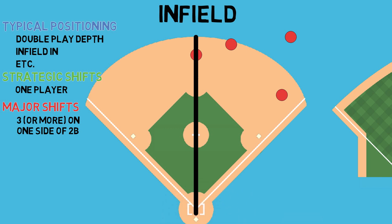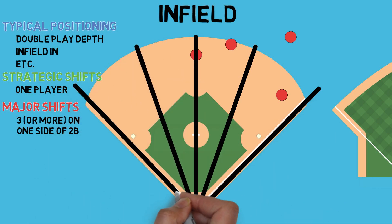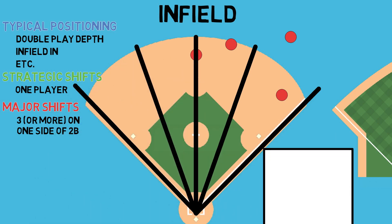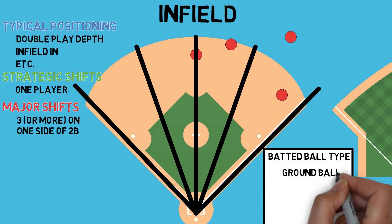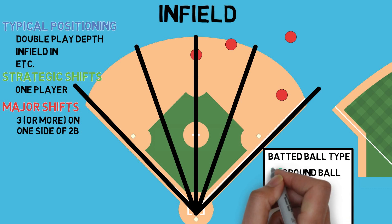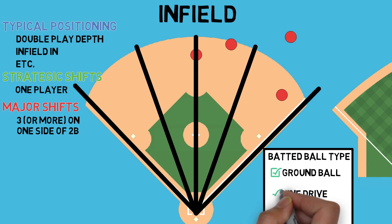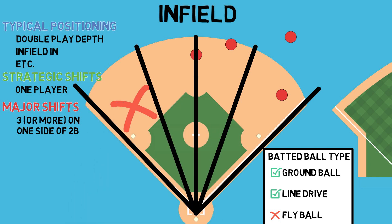These decisions are not made blindly. The field can be split up into several sections, and every time a ball is put in play to one of those sections, that is recorded. For most infield shifts, we focus on ground balls and line drives rather than fly balls, because those are the plays that position players play a larger role in recording an out. The main takeaway is that if a hitter doesn't hit balls to one of these sections, you probably don't need to have a position player stationed there.